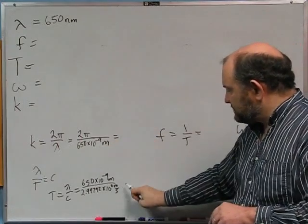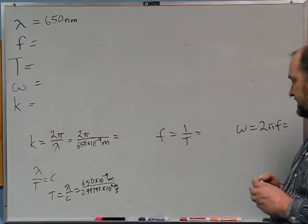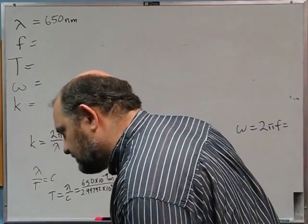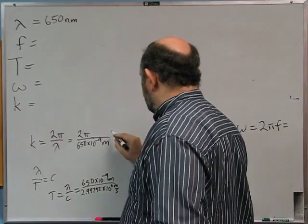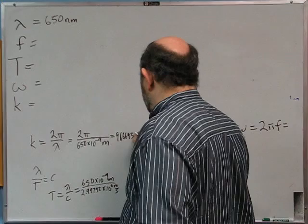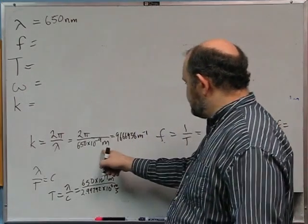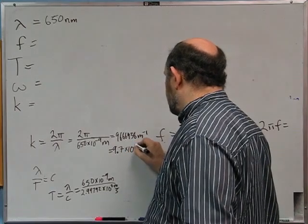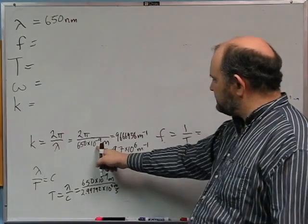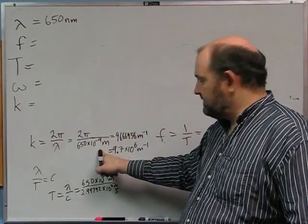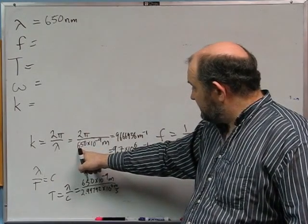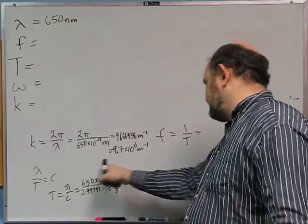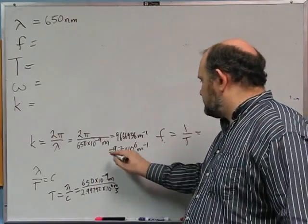Starting with wave number: the result is 9,666,438 meters⁻¹, or more cleanly 9.7 times 10⁶ meters⁻¹. Let me verify: 650 nanometers is 6.5 times 10⁻⁷ meters, and 2π divided by that gives close to 10⁷, so 9 times 10⁶ is consistent. That is the wave number.